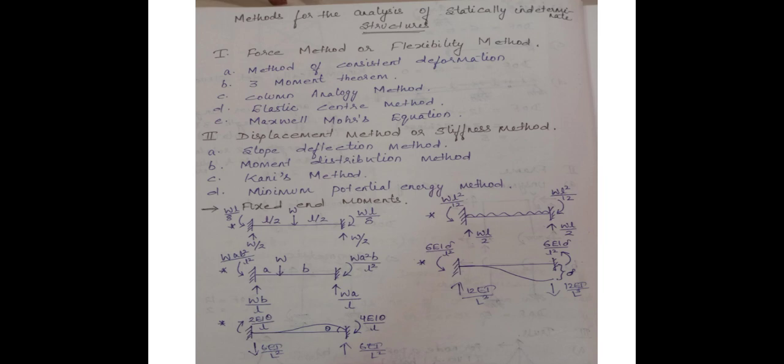The second method is the displacement method or stiffness method. It includes slope deflection method, moment distribution method, Kani's method, and also minimum potential energy method. In Structural Analysis 2, we are covering three methods for the displacement method: slope deflection method, moment distribution method, and Kani's method.